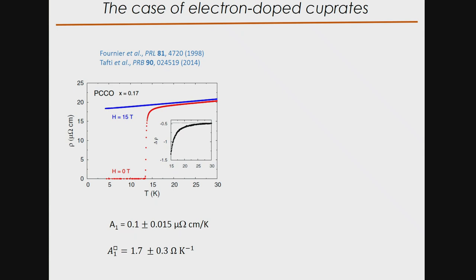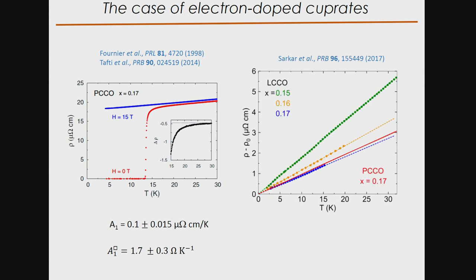Here I show an example of PCCO resistivity versus temperature measured at 15 tesla. For this compound the critical field is much smaller than for hole-doped compounds. There is a beautiful linear resistivity that persists down to very low temperature, as shown previously by Patrick Fournier. The slope of the linear resistivity is much smaller than for the hole-doped cuprate — something like 1.7 Ω/K — but the same trend holds: when you decrease the doping and approach the critical point, the slope of the linear resistivity increases.